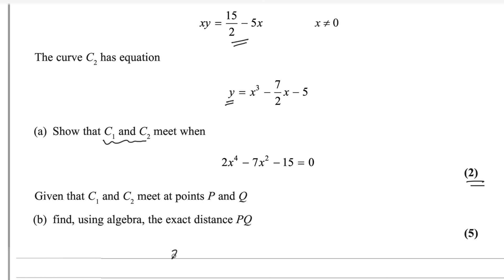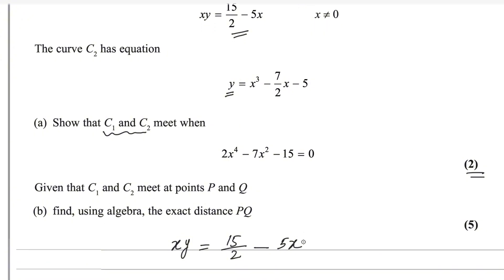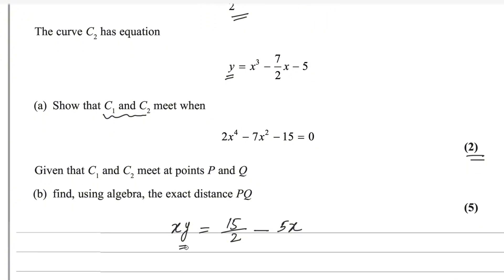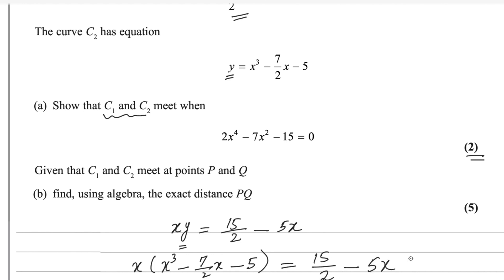XY equals 15 over 2 minus 5X. Now substitute the value of Y from the second equation — this is the equation for curve C2. We substitute into C1, giving X into (X³ minus 7 over 2 X minus 5) equals 15 over 2 minus 5X.